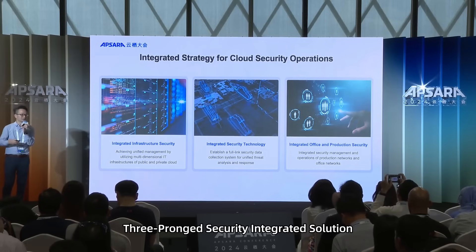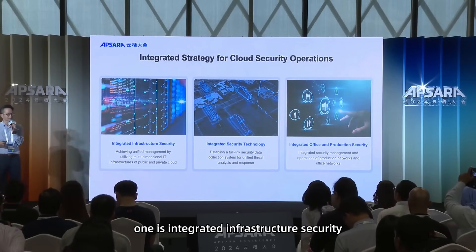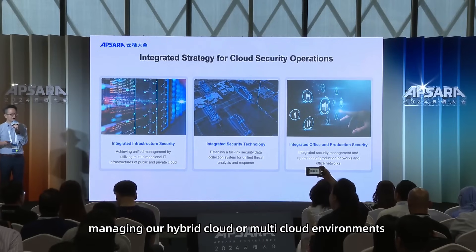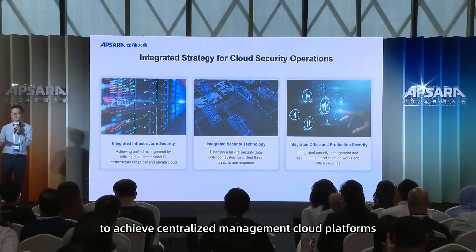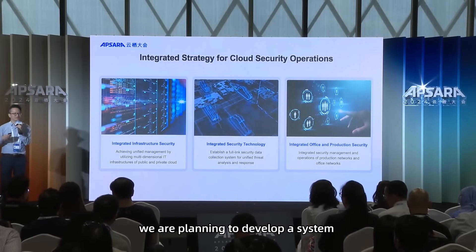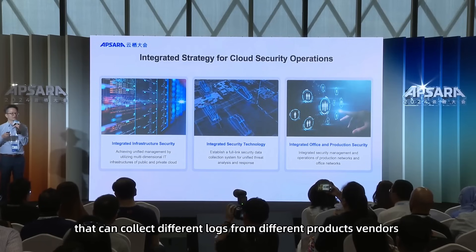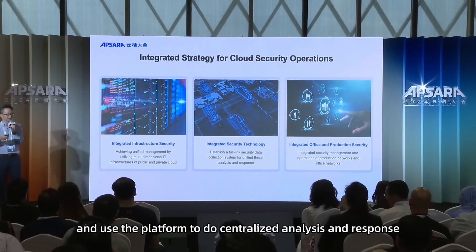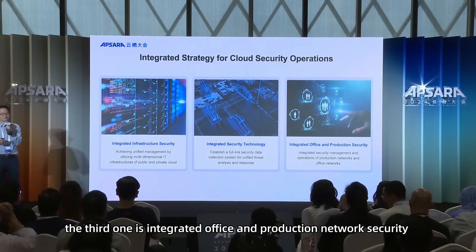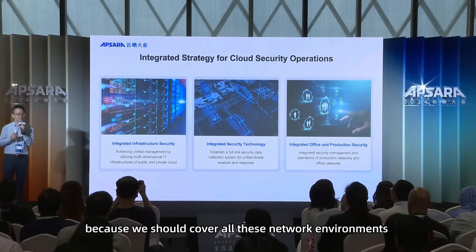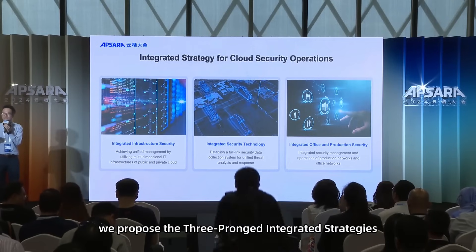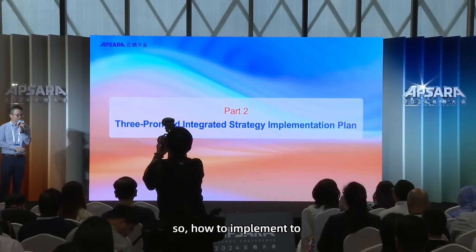Alibaba Cloud Security has proposed a three-pronged integrated security strategy. First is integrated infrastructure security — we are looking to reduce the workload for managing hybrid cloud and multi-cloud environments to achieve centralized management. Second is integrated security technologies — we plan to develop a system that collects logs from different products and vendors for centralized analysis and response. Third is integrated office and production network security, covering all network environments.